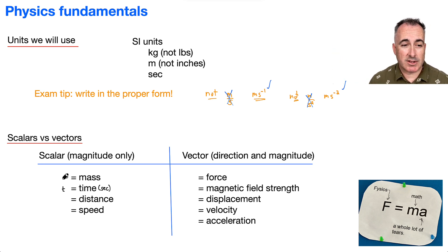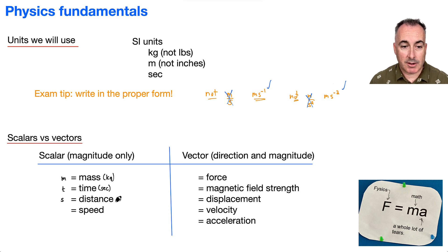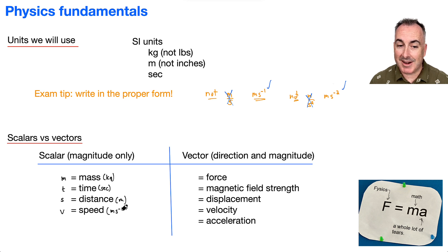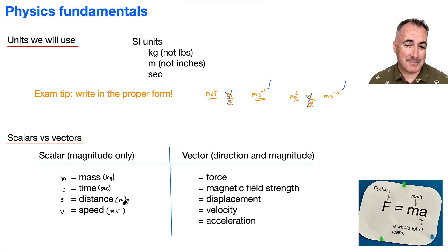Let's continue with scalar examples. m is mass, measured in kilograms. Distance is written as s, measured in meters. And speed, written as v, is measured in meters per second — but remember, we write it as meters seconds to the minus one.